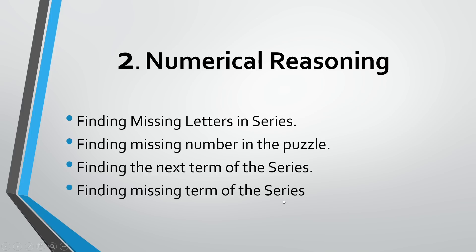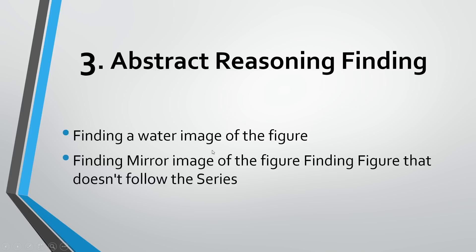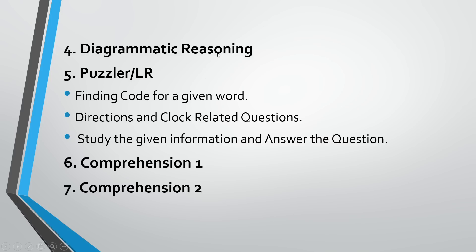For Numerical Reasoning, questions covered: finding missing letters in a series, finding the missing number in a puzzle (where a question mark is placed), finding the next term of a series, and finding the missing term of a series. Note the differences between these four types. For Abstract Reasoning, questions involved: finding the water image of a figure, finding the mirror image of a figure, and finding the figure that does not follow the series.